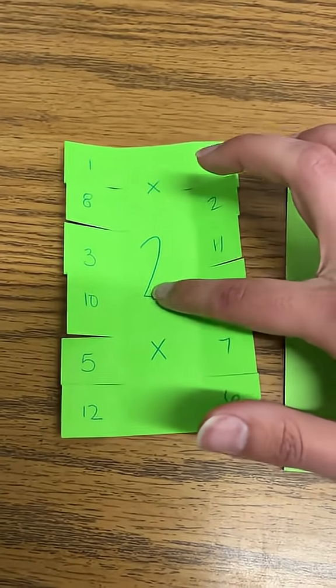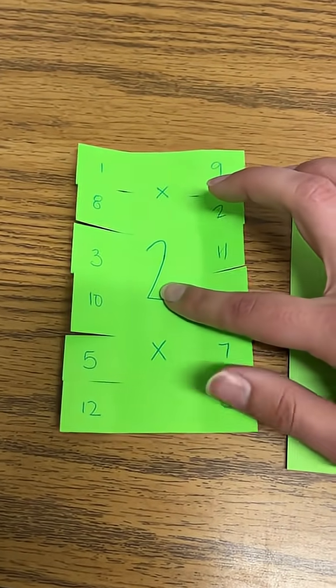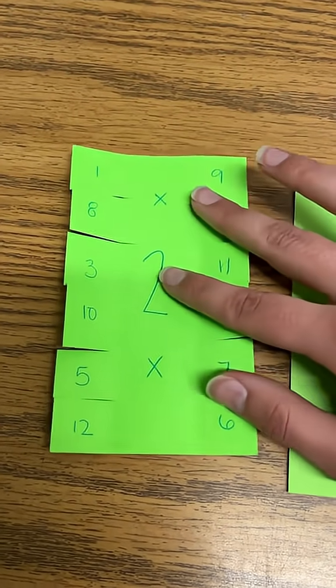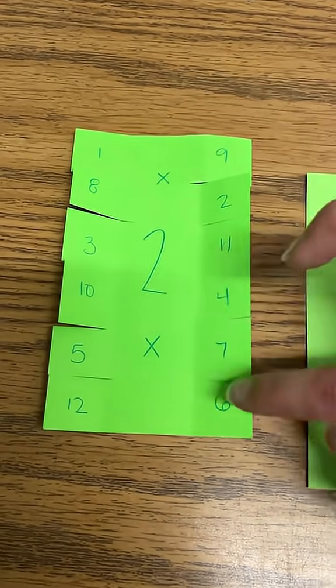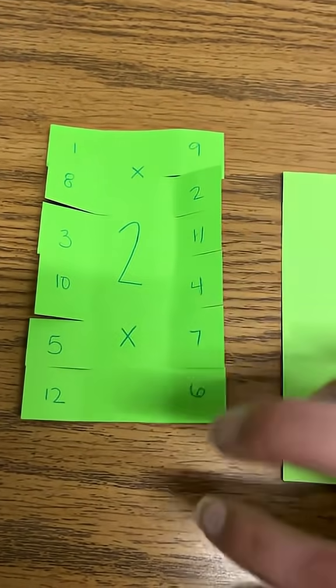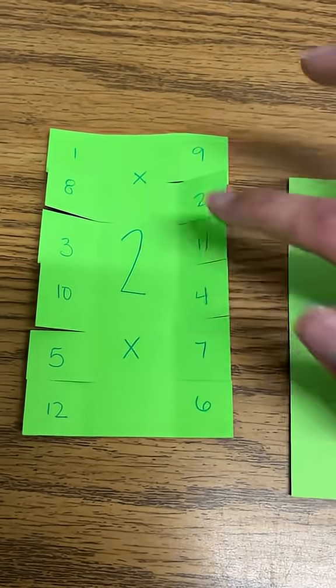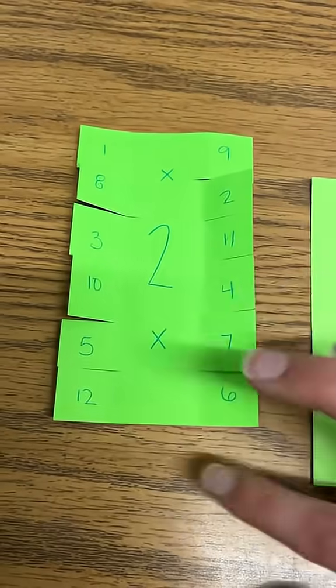Then the students are going to choose what number they're going to be multiplying by. This number is consistent throughout the whole notecard. This notecard is for twos. Draw the multiplication symbol and then they fill in the numbers randomly throughout the page. So one, two, three, all the way through twelve.